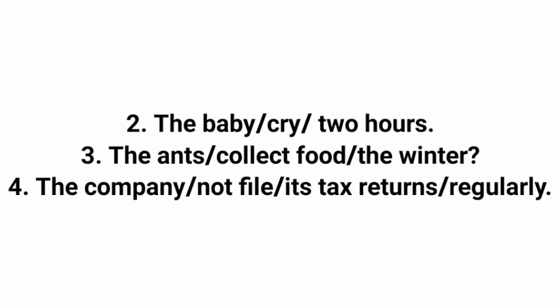Second: 'The baby had been crying for two hours.' Two hours is the duration — the period of time — so we use 'for'. Third, which is an interrogative: 'Had the ants been collecting food for the winter?' Fourth, a negative: 'The company had not been filing its tax returns regularly.' See how we use the structure: 'had been' plus first form of verb plus '-ing'.